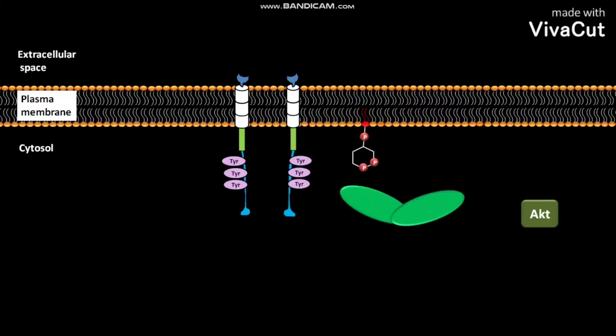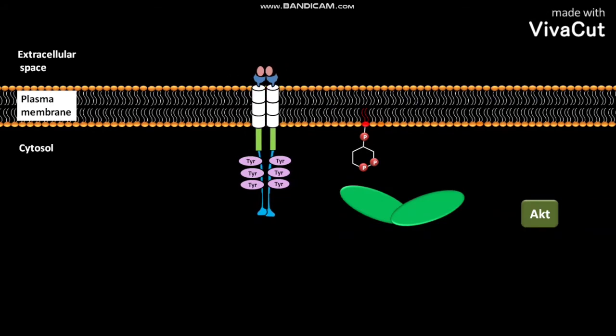The plasma membrane of a cell has receptor tyrosine kinases. Whenever growth factors like PDGF and EGF are present in the extracellular space, they bind to the receptor tyrosine kinases. This growth factor binding causes receptor aggregation or clustering.